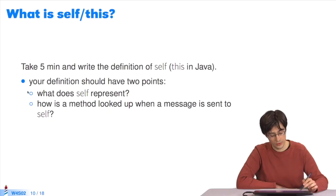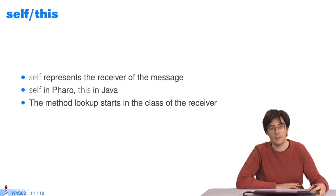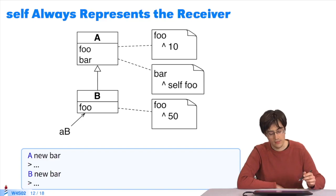It's important for you to take the time to think about what self means. It is important to describe two points. What does self represent? How does message sending behave when a message is sent to self? Self and this, this being the term in Java, are the same thing. They always represent the receiver of the message. So, we saw this example with a new foo, and b new foo.